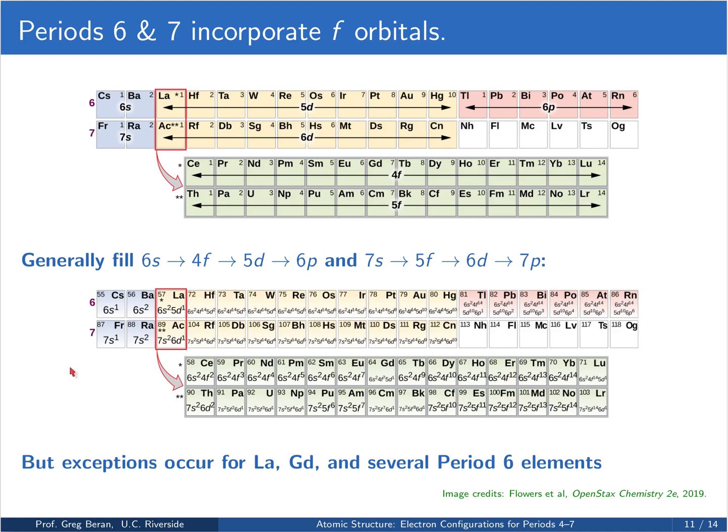In period 7, things get even messier. The first two elements behave similarly. So does element 89 with a 7s2 6d1. So you might expect in element 90 that it would have a 7s2 5f2 configuration, but instead it has a 6d2. And here you see we have a mixture of electrons in the f and d orbitals. So in other words, things just start getting really complicated. The rules we've talked about are useful for giving you a rough idea of what the electron configurations are in this part of the periodic table, but you often will need to verify with a diagram like this in order to see what the actual configurations are for an element.